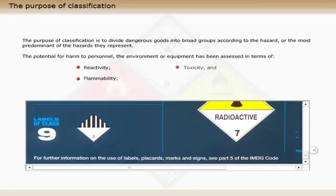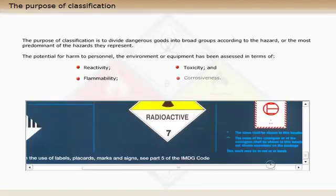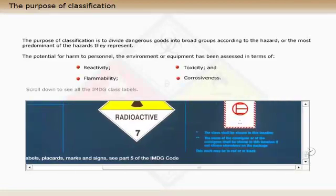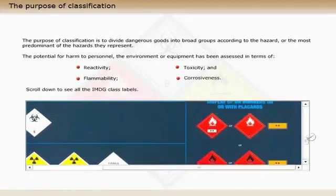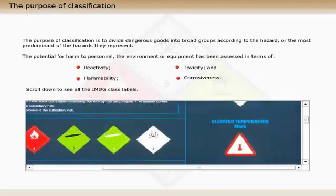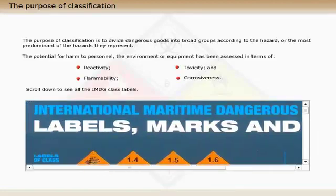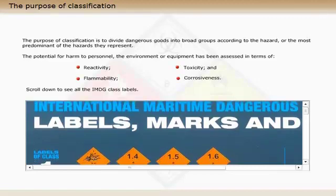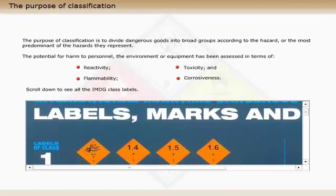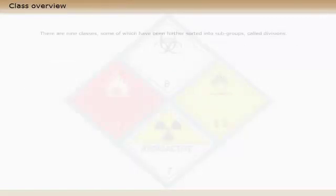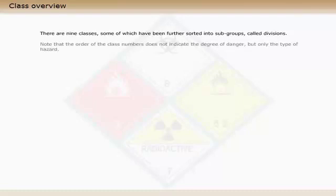Scroll down to see all the IMDG class labels. There are nine classes, some of which have been further sorted into subgroups called divisions. Note that the order of the class numbers does not indicate the degree of danger, but only the type of hazard. The classes are: